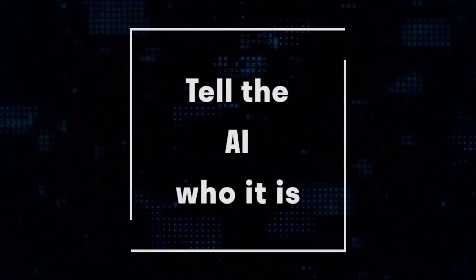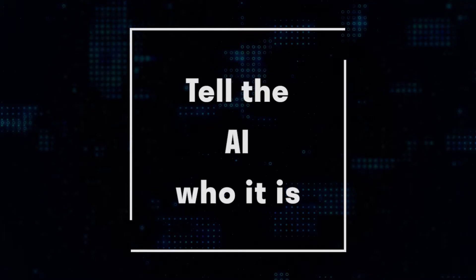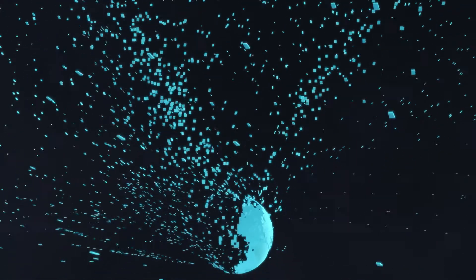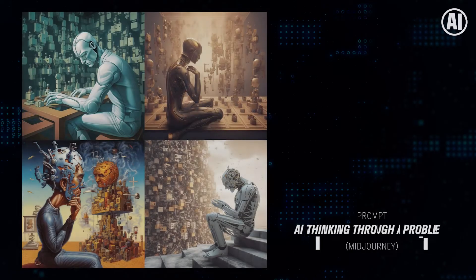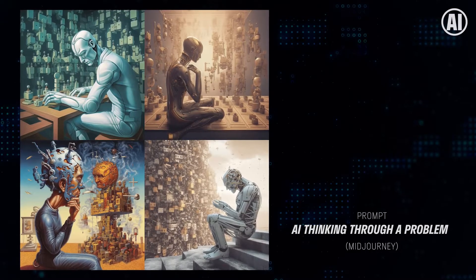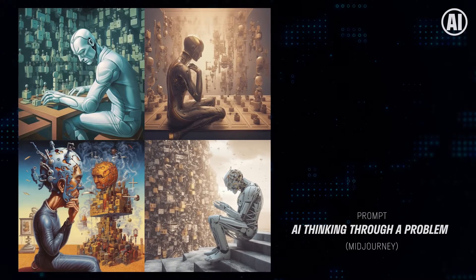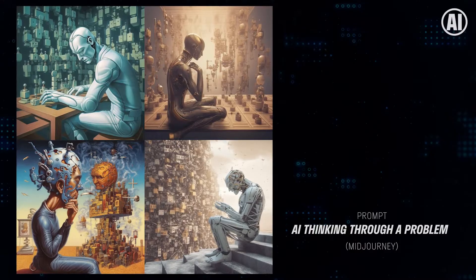The first thing to remember is that you want to tell the AI who it is. The reason you want to do that is because the AI has been trained on billions of documents, and telling it who it is gives it the right context from which to start. Once you tell the AI who it is, the second thing to do is to give the AI very clear instructions about what you want it to do. You have to remember that the AI doesn't know you and doesn't know any of your context, so the more context you give it, the more effective it can be.